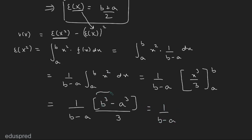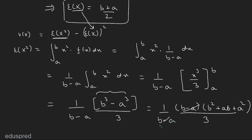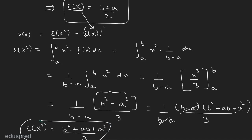We use the factoring formula: b cubed minus a cubed equals b minus a times b squared plus ab plus a squared. After substituting this, the b minus a terms cancel, leaving expected value of X squared equal to b squared plus ab plus a squared divided by 3.